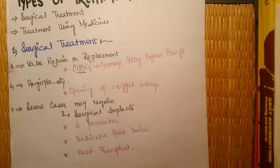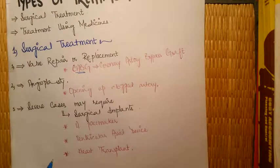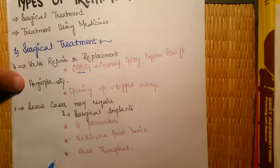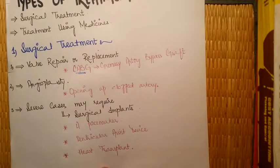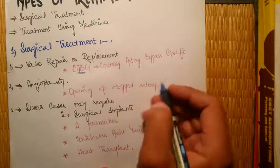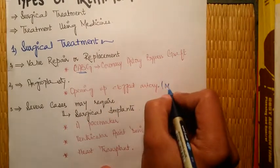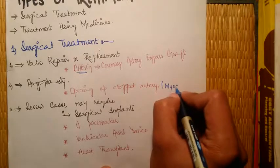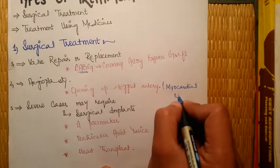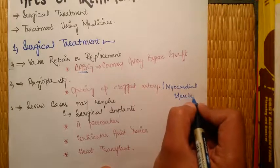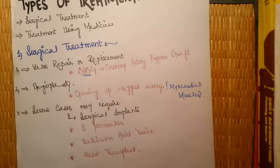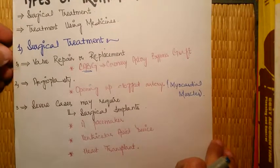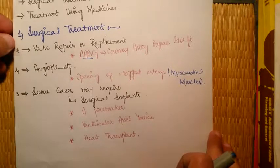The second surgical option is angioplasty. Angioplasty is the opening up of any clogged artery supplying blood to the heart muscle or myocardial muscles. It can be done using various techniques to open up the clogged artery supplying blood to the heart or heart muscles.